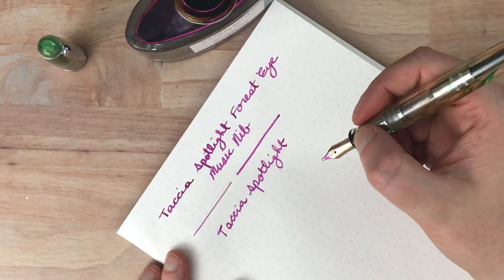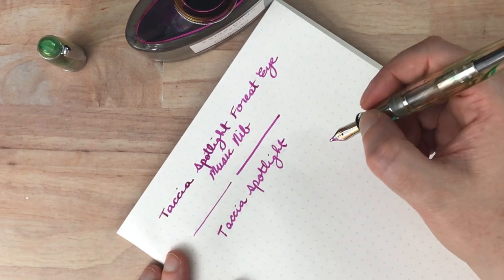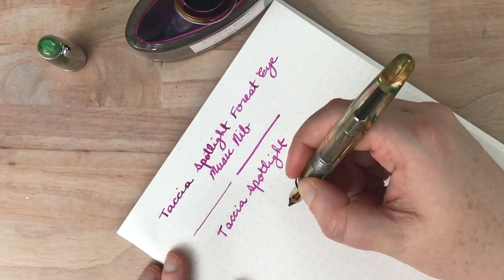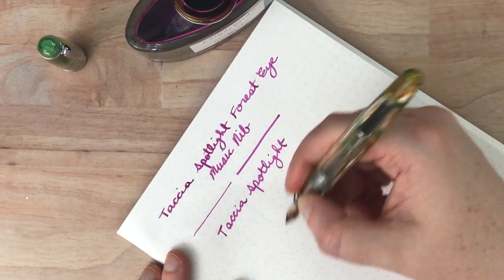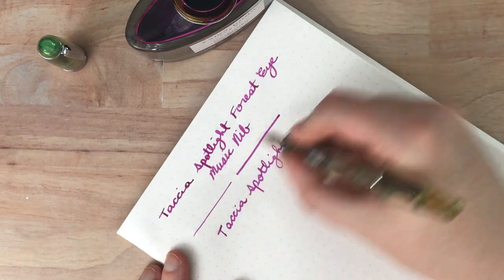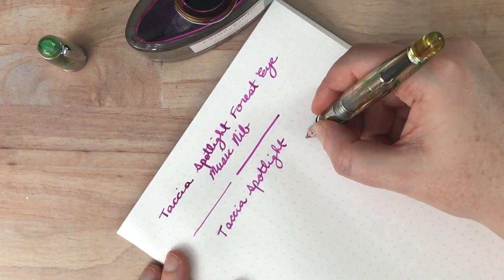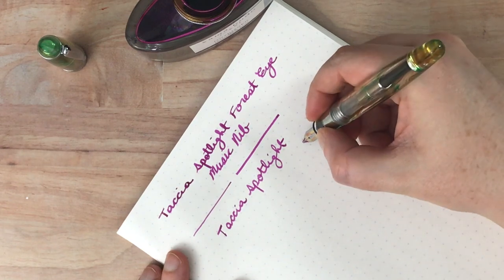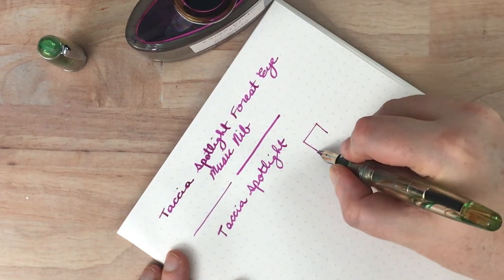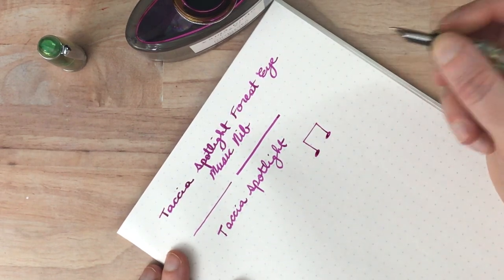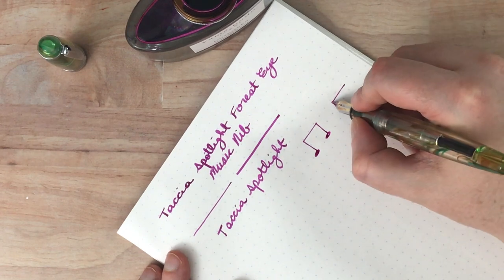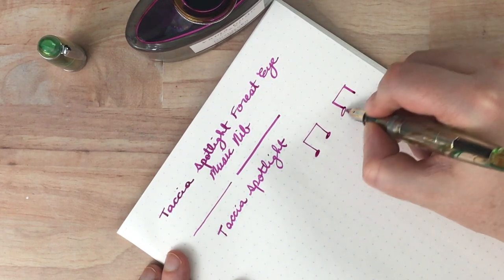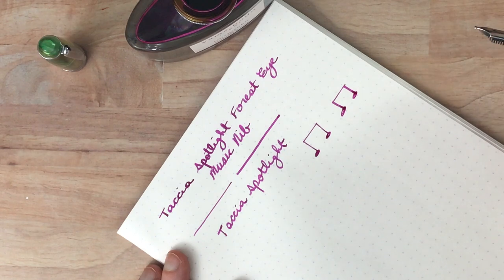So I've noticed this as well with my Platinum Music Nib that if I angle it sideways, I get a much more readable line, like it's not all just thick like this. And of course, this is supposed to be for writing musical notes. Although I suppose, let's see, because you have that like that.